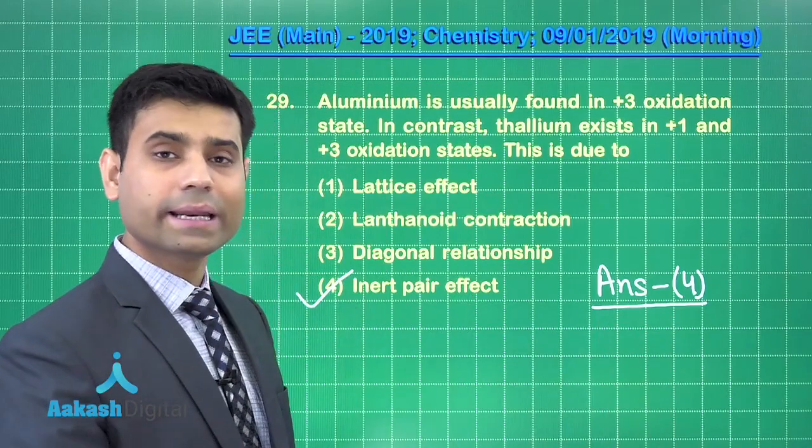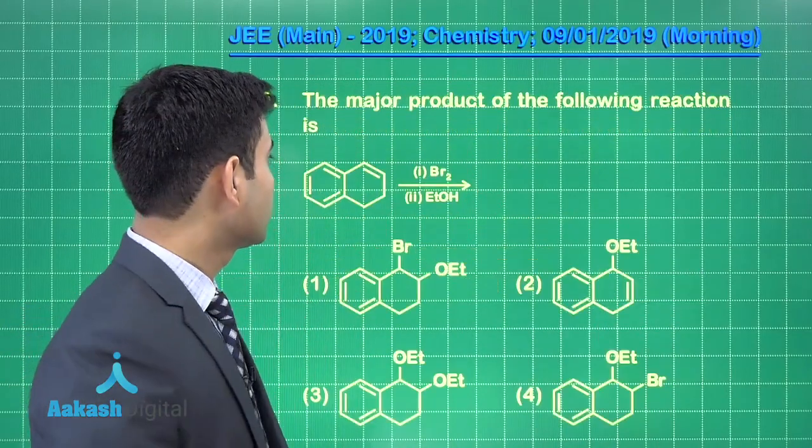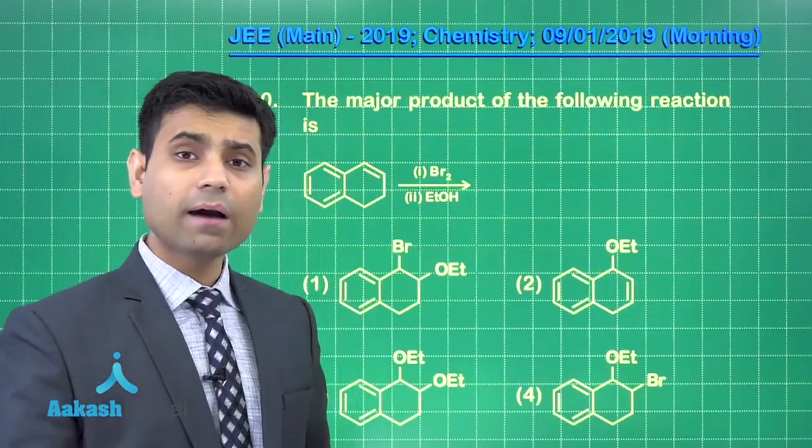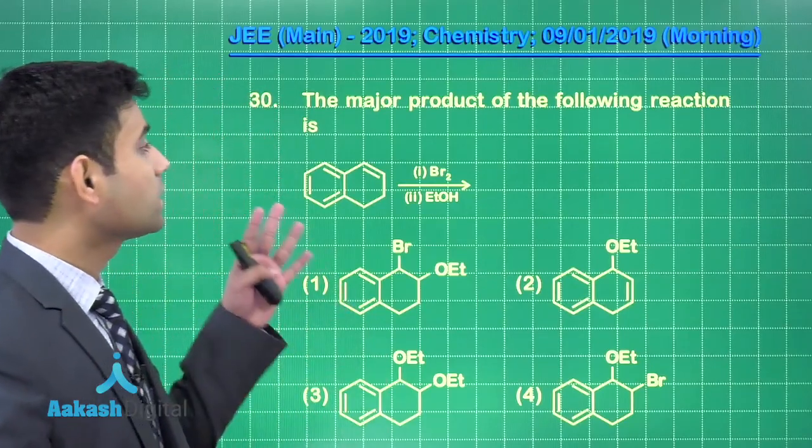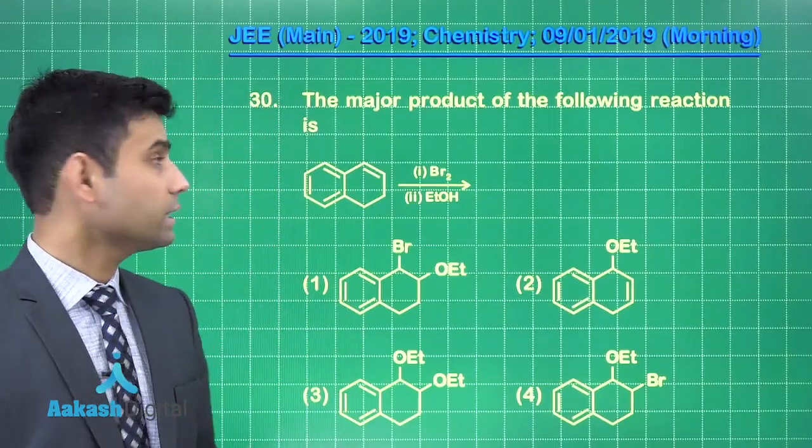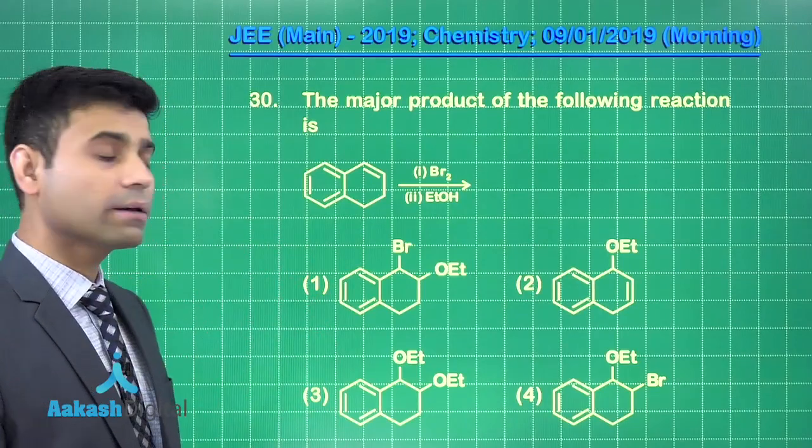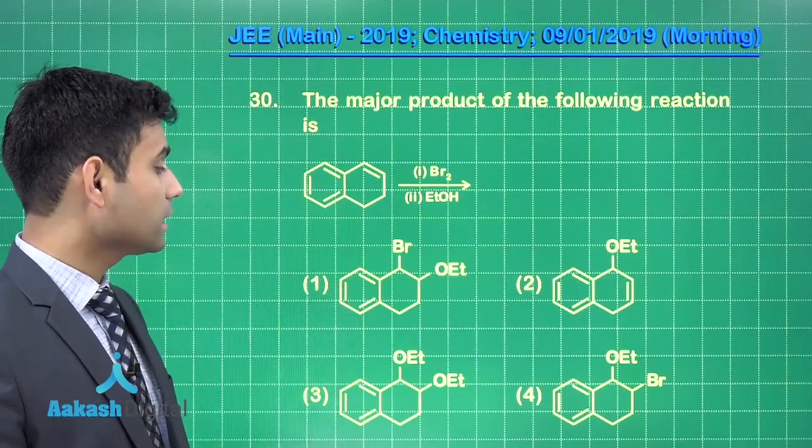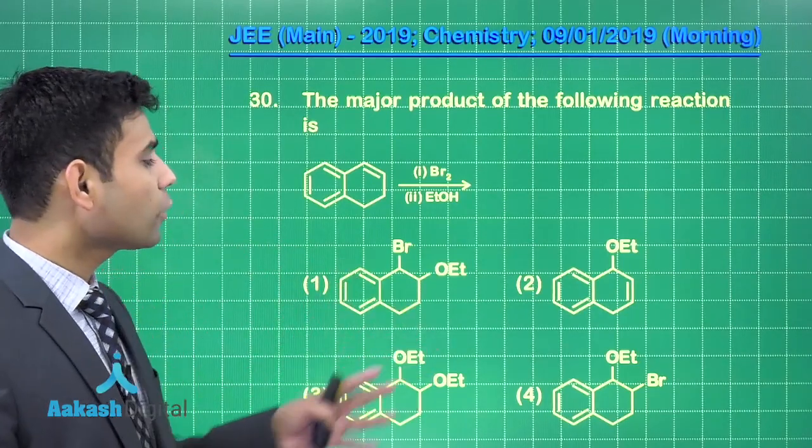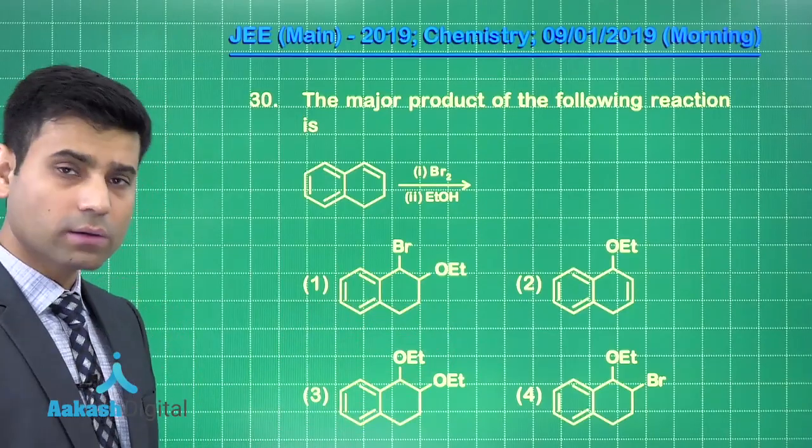Now let us move to the next question. This is the next question we have in which it says the major product of the following reaction is. This is the reaction given we have Br2 and ethanol. These are the 4 options here. Now let us solve this question.